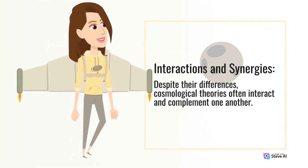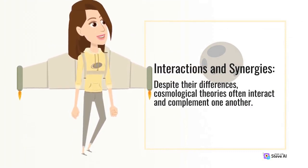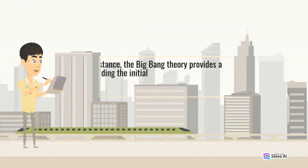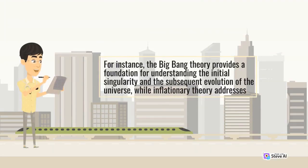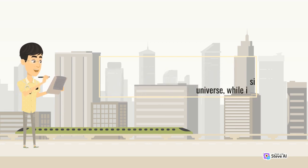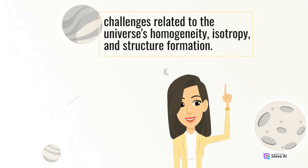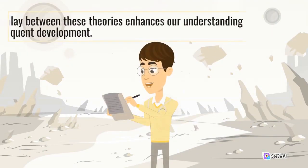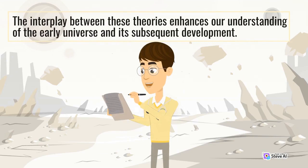Despite their differences, cosmological theories often interact and complement one another. For instance, the Big Bang Theory provides a foundation for understanding the initial singularity and the subsequent evolution of the universe, while Inflationary Theory addresses challenges related to the universe's homogeneity, isotropy, and structure formation. The interplay between these theories enhances our understanding of the early universe and its subsequent development.